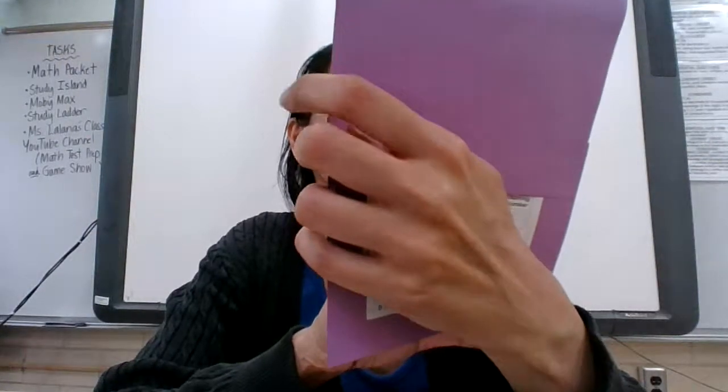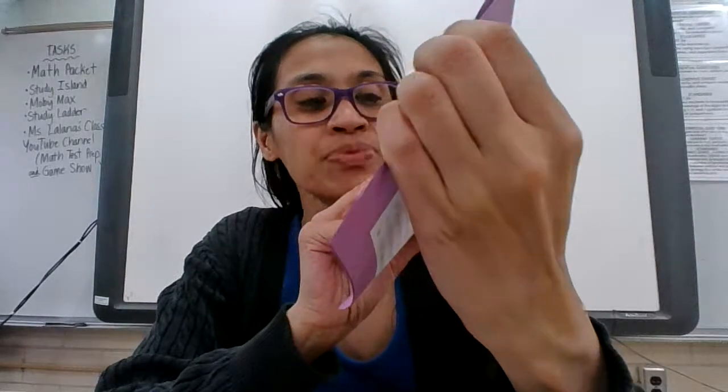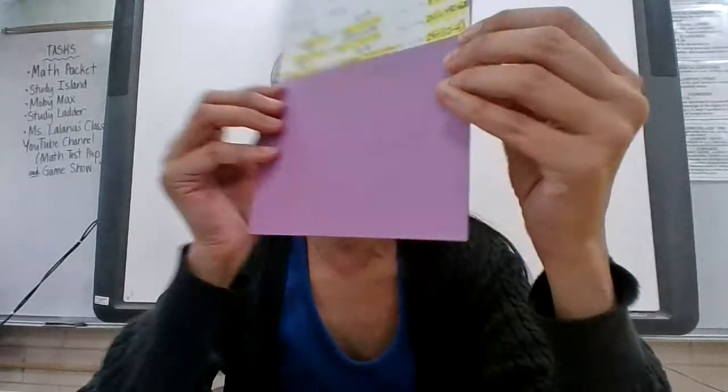The last one says the quotient of 24 and the difference of 12 and 4. Again, the same thing—I highlighted the key phrases and underlined some key words.